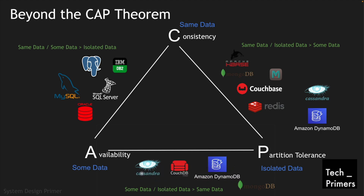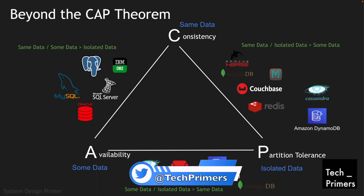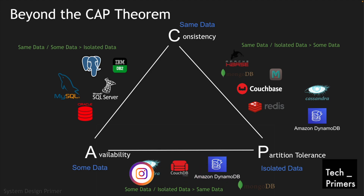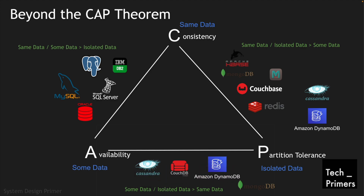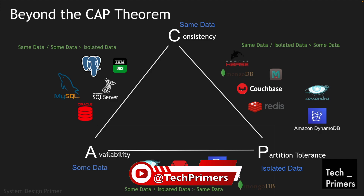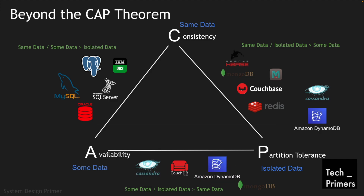In the CAP theorem, we talked about consistency — which is nothing but the same data — availability — which is nothing but some data being available — and partition tolerance, which is isolated data. A system can achieve only two of these. For example, you can have consistency and availability, consistency and partition tolerance, or availability and partition tolerance, and different databases align to each combination.